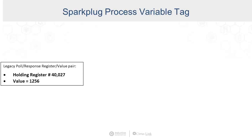There are all of these metrics that for every tag we have to double-click and edit. If our SCADA system has 60,000 tags, that's 60,000 separate edits that we have to do.